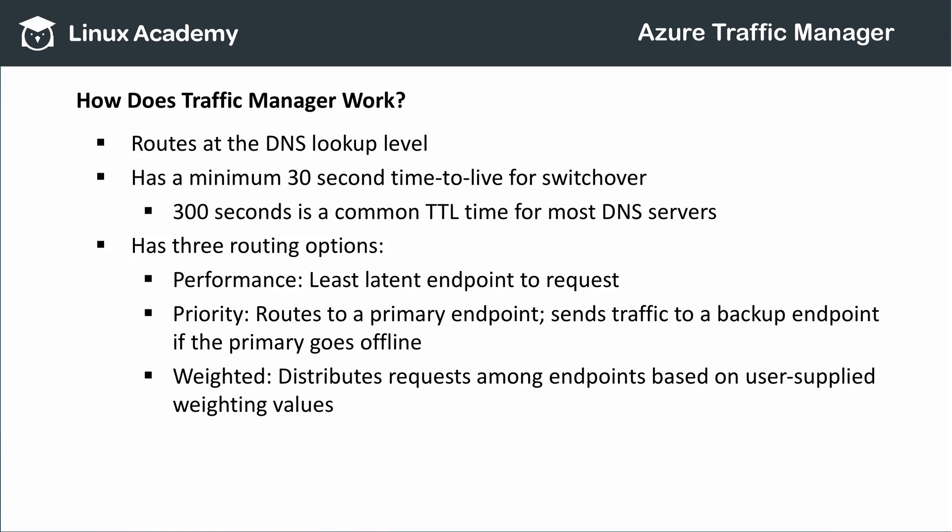Priority Routing sends all traffic to a single endpoint. If that primary endpoint should fail, Traffic Manager will send requests to the secondary endpoint. If I provide a tertiary endpoint, and both the primary and secondary endpoints go offline, then Traffic Manager will route to that tertiary, until either the primary or secondary come back online.